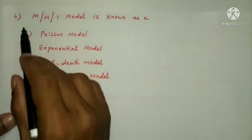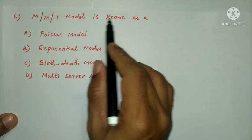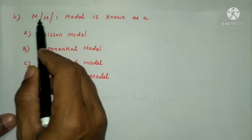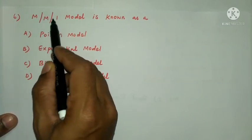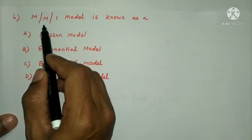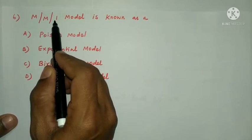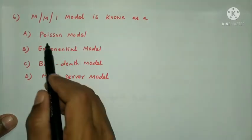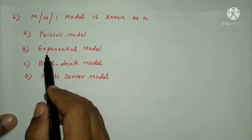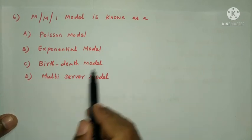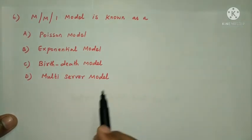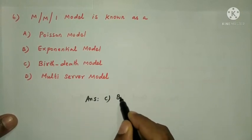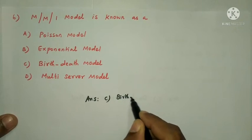Next question: M/M/1 Model is known as? In an M/M/1 queue, the first M represents arrival rate, the second M is the service rate, and 1 is the number of servers. It follows a first-come, first-served discipline. The answer is Option C: Birth-Death Model.